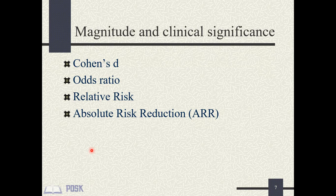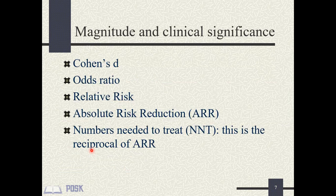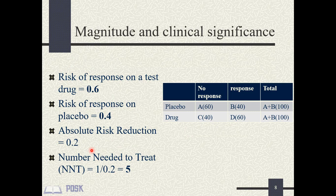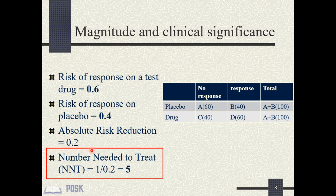The number needed to treat (NNT) is the number of patients you need to treat to prevent one additional bad outcome like death or complications. Its counterpart is the number needed to harm, which is the number of people you need to expose to a hazard to develop one additional adverse outcome. For example, when the absolute risk reduction is 0.2, the NNT is 5. NNT is the reciprocal of absolute risk reduction.